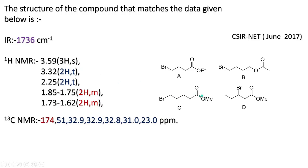So matching all the values: 3.59 three-hydrogen singlet — OMe protons; 3.32 two-hydrogen triplet — CH₂ attached to bromine (electronegative atom); 2.25 two-hydrogen triplet — CH₂ attached to carbonyl group; 1.85 — CH₂; and 1.73 — another CH₂. So option C is the correct answer.